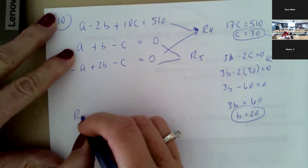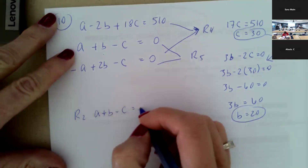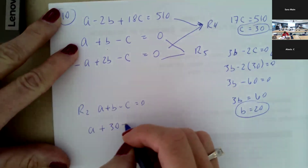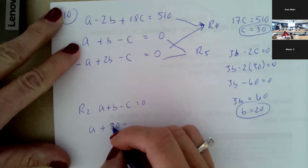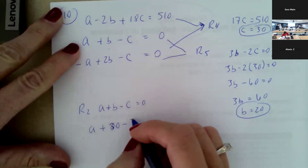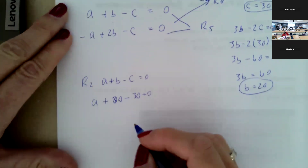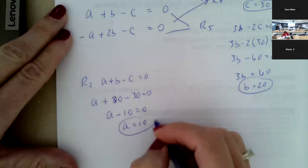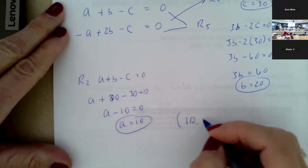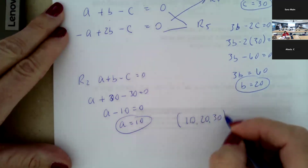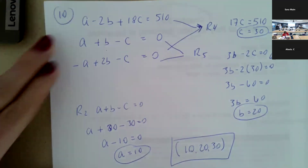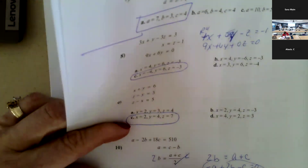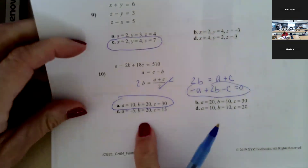Using row two, which is a plus b minus c equals zero: a plus twenty minus thirty equals zero, so a minus ten equals zero, giving a equals ten. So I have ten, twenty, and thirty for question number ten — that looks like letter A is the solution.